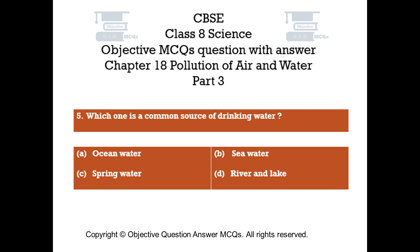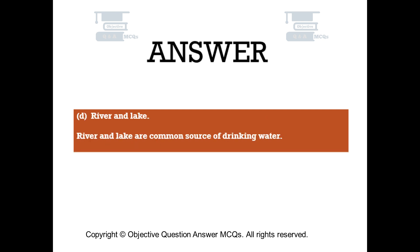Question number 5: Which one is a common source of drinking water? Option A: ocean water, Option B: sea water, Option C: spring water, Option D: river and lake. The right answer is Option D: river and lake. Rivers and lakes are a common source of drinking water.